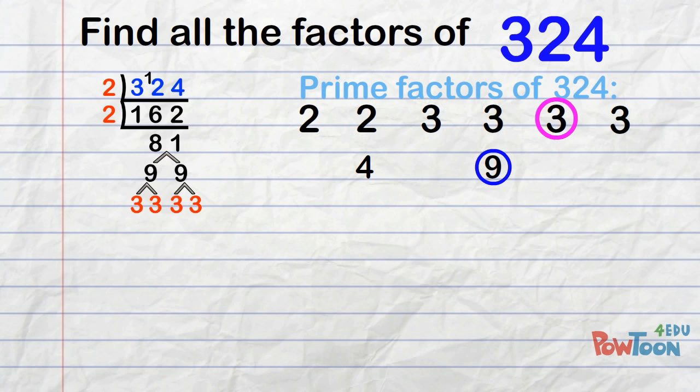So 9 times 3 is 27. And all the 3s multiplied together is the equivalent of 9 times 9. That's 81.